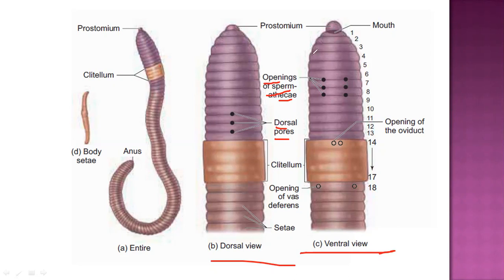The first segment is called the prostomium — sometimes it is considered a segment and sometimes not. The spermathecal pores are located in the region between segments 6-7, 7-8, and 8-9. Since the earthworm is a hermaphrodite, it has testis and ovary in the same body. The sperm is stored in a spermathecal bag.